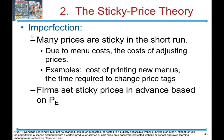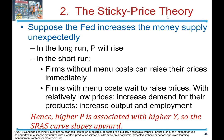The sticky price theory: the imperfection is that many prices are sticky in the short run due to menu costs — the cost of adjusting prices, such as printing new menus or changing price tags. Firms set sticky prices in advance based on price expectations. Suppose the Fed increases the money supply unexpectedly: in the long run prices will rise, but in the short run firms with high menu costs wait to raise prices. With relatively low prices, they see increased demand for their products, increasing output and employment. Hence, a higher price is associated with higher output and the short-run aggregate supply curve slopes upward.